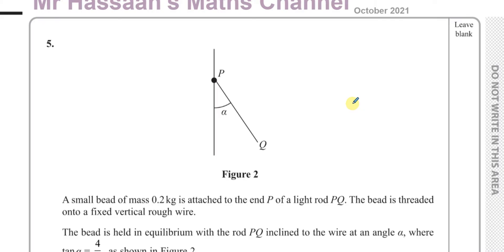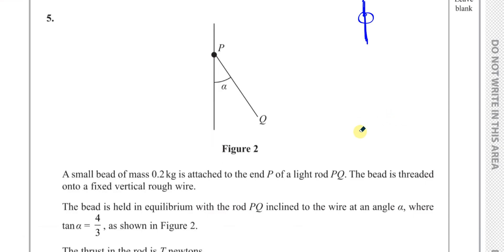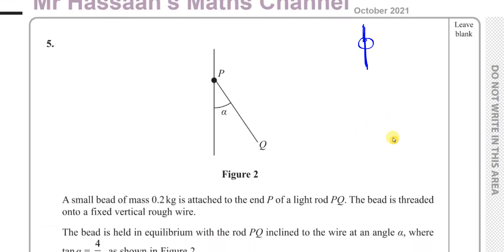This question is about statics. A small bead of mass 0.2 kilograms is attached to the end P of a light rod. The bead has a little hole in it — it's a spherical thing with a hole, and the rod goes through this hole. The bead is threaded onto a fixed vertical rough wire. The rod is not a string; it's rigid, like a stick — not flexible. The bead is held in equilibrium with the rod inclined to the wire at angle α.